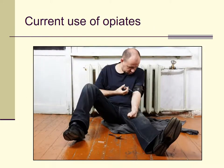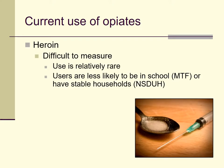So what do we know about current use of opiates? When it comes to heroin, which is in many ways the most famous of the opiates, it's fairly difficult to measure for a couple of reasons. One is that heroin use is relatively rare compared to many other drugs. Also, folks who use heroin tend to be on the margins of society, meaning they're probably less likely to be regularly attending school — so they might be missed by the Monitoring the Future survey — or to have a stable household, so they might be missed by the National Survey of Drug Use and Health.